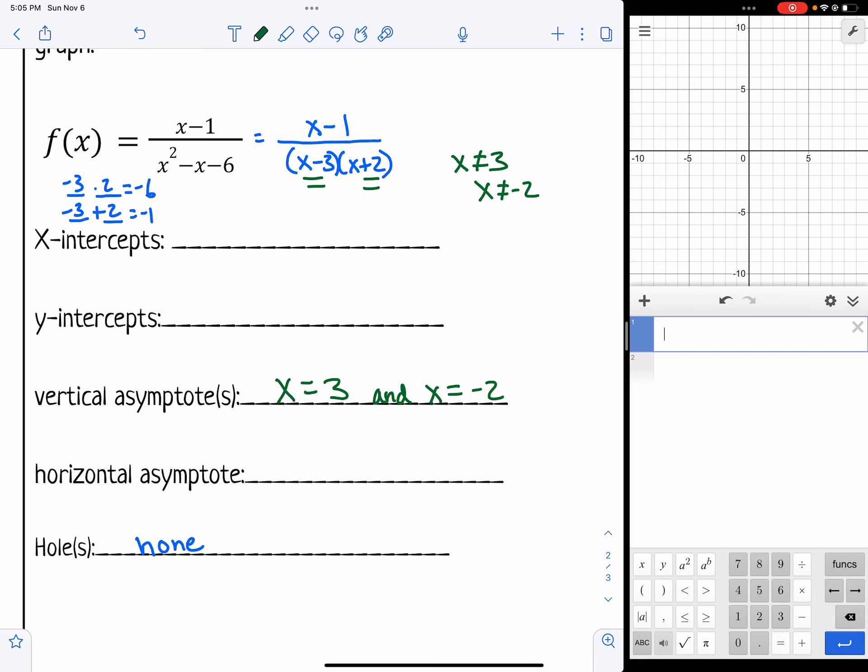And the horizontal asymptote comes from the degree of the numerator compared to the denominator. So I see I have a higher degree at the bottom in my denominator. So I'm going to say that creates a horizontal asymptote at y equals 0. So let's go ahead and type it in. And we'll find the intercepts and just check and make sure everything looks nice and put it on our graph.